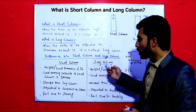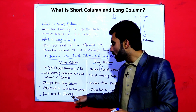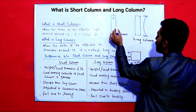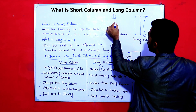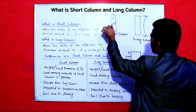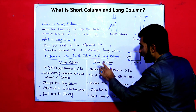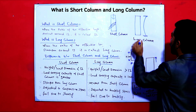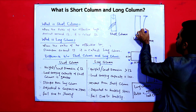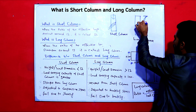The fifth difference is the failure mode. A short column fails due to shearing, while a long column fails due to buckling.